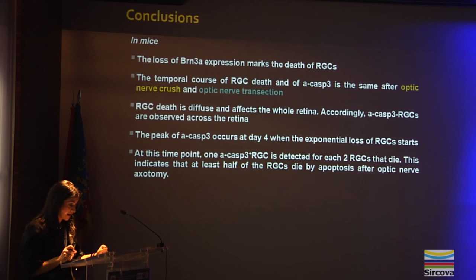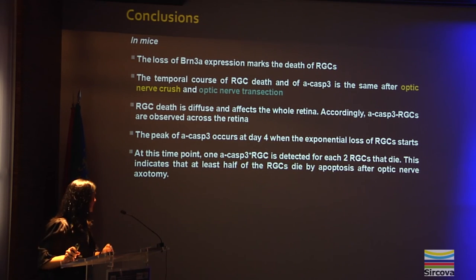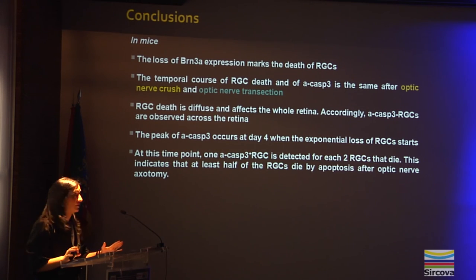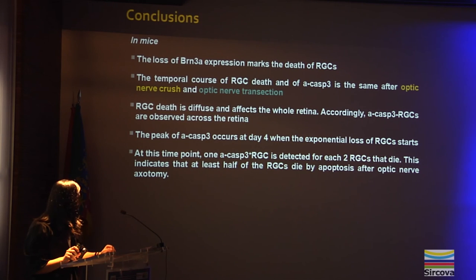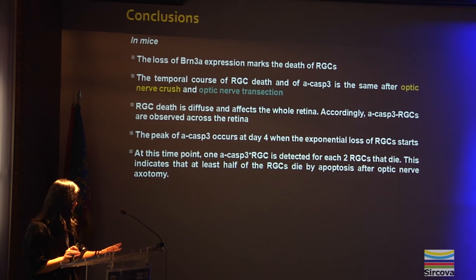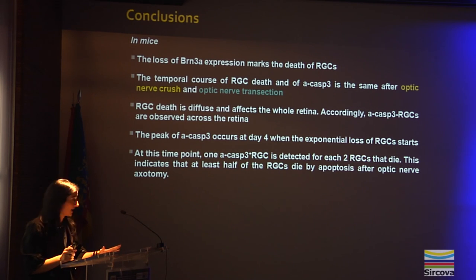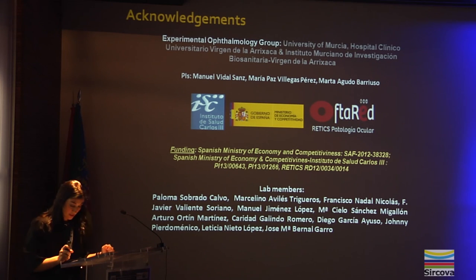The conclusions of this work are: the loss of BRN3A expression marks the death of ganglion cells. The temporal course of ganglion cell death and of active caspase-3 is the same after optic nerve crush and after optic nerve transection. Retinal ganglion cell death is diffuse and affects the whole retina; accordingly, active caspase-3 positive ganglion cells are observed across the retina. The peak of active caspase-3 occurs at day 4, when exponential loss of ganglion cells starts. At this time point, one active caspase-3 positive ganglion cell is detected for every two ganglion cells that die. This indicates that at least half of the ganglion cells die by apoptosis after optic nerve axotomy. Thank you for your attention.